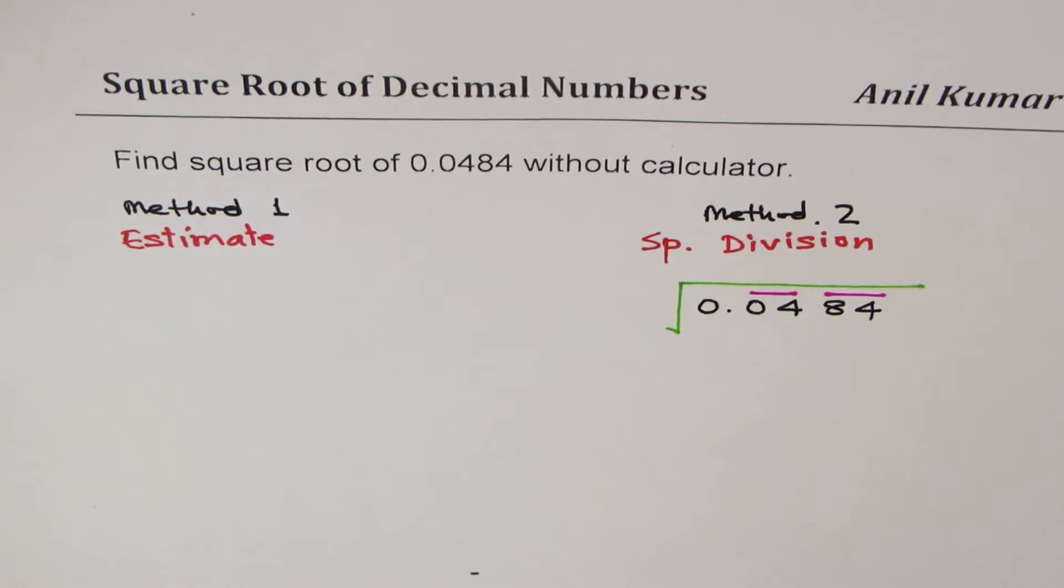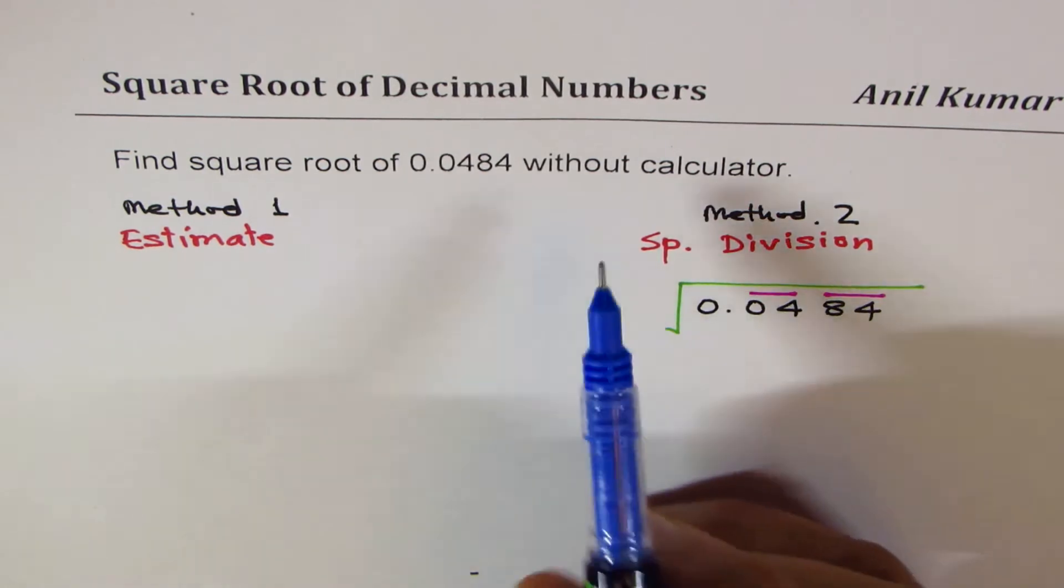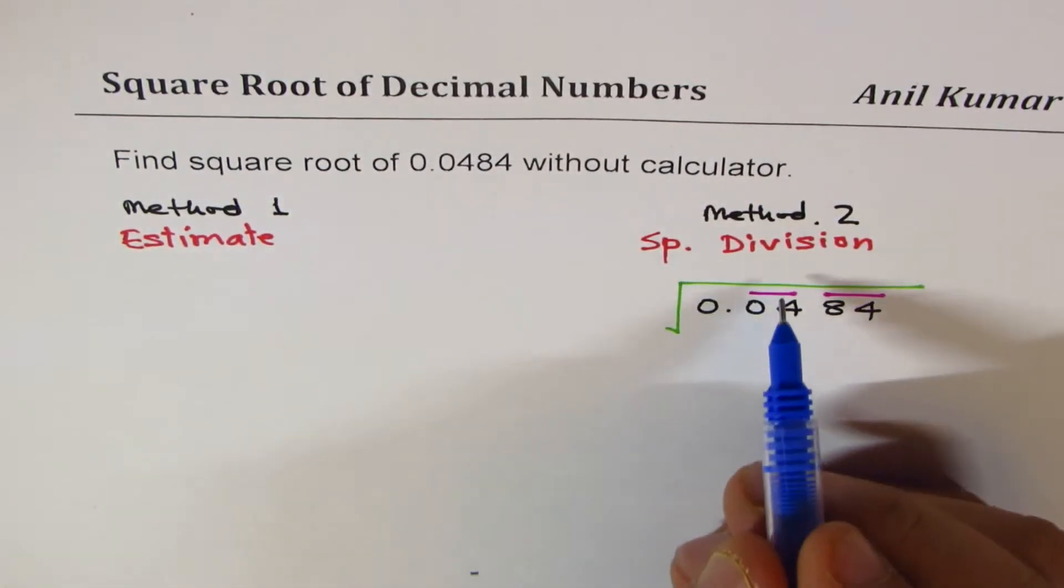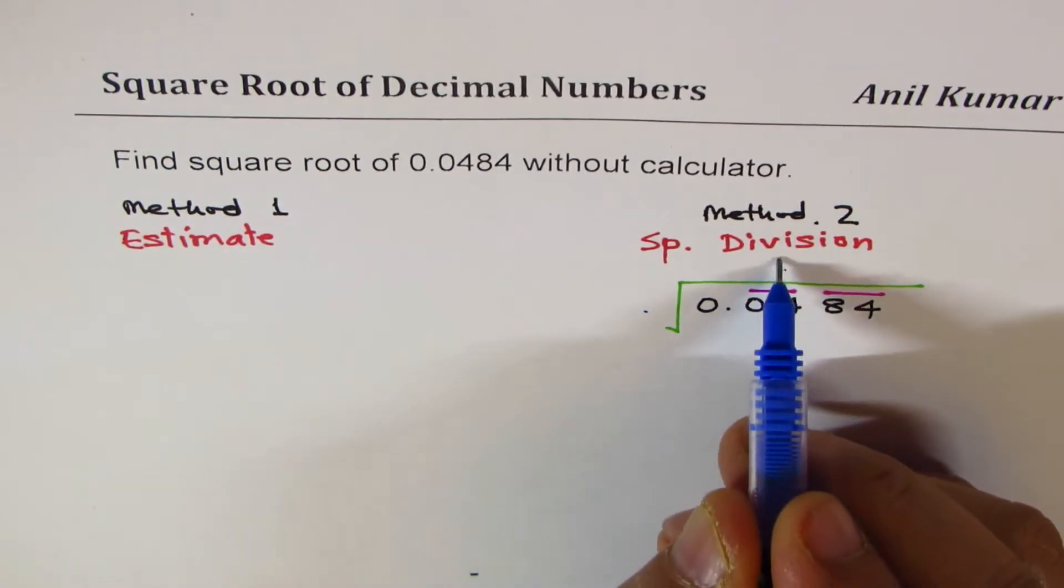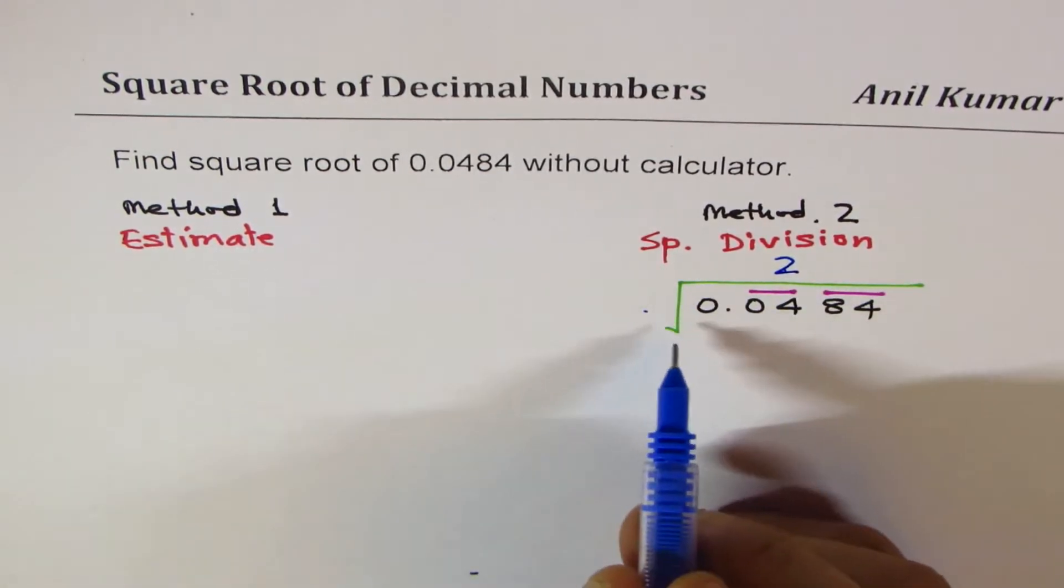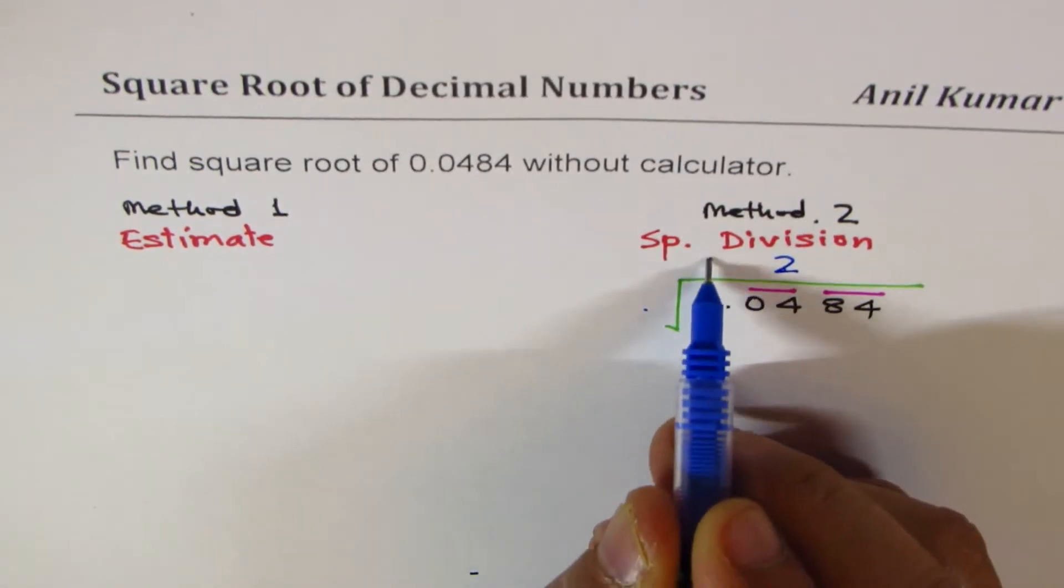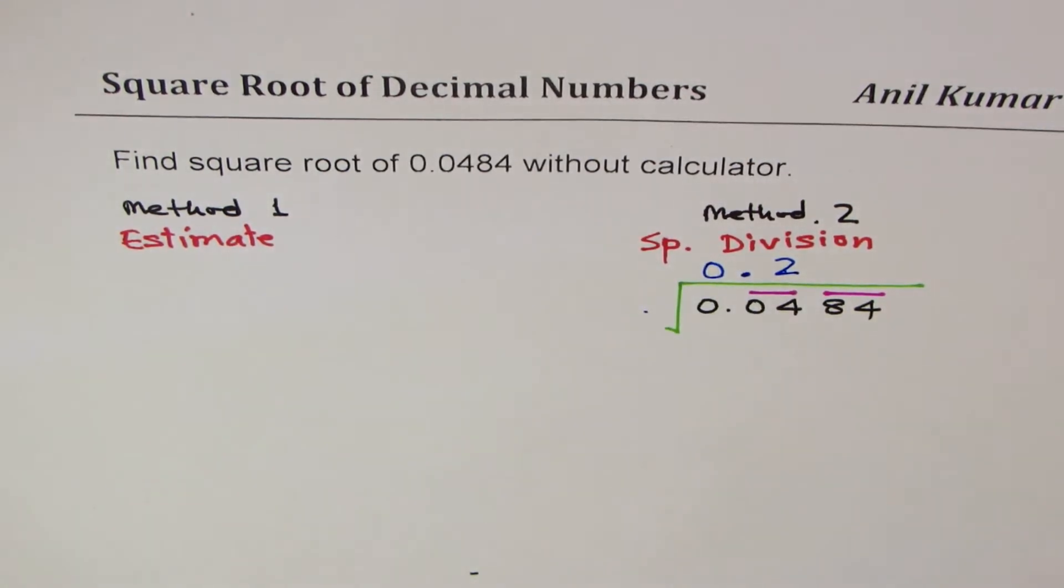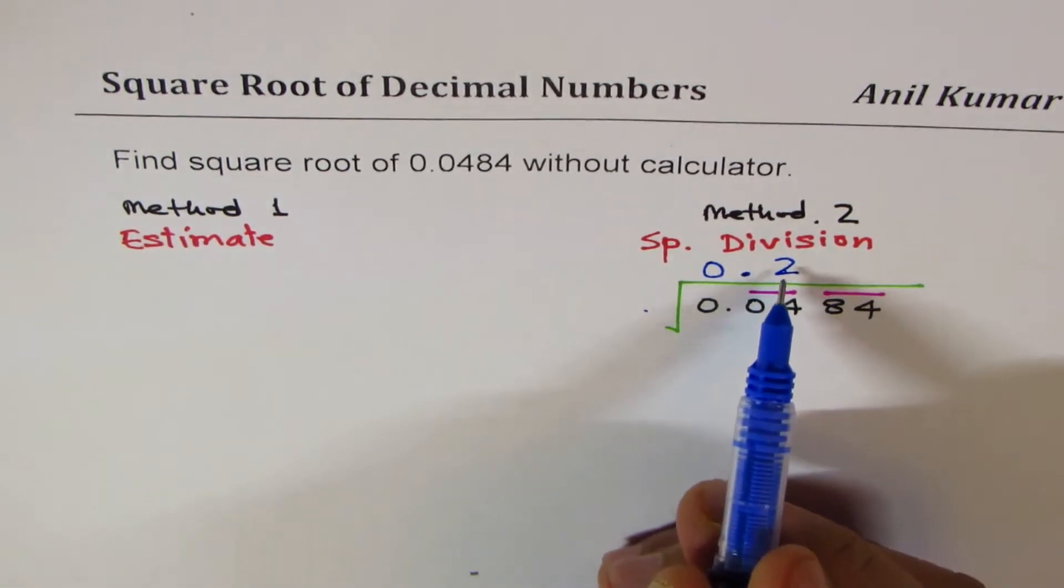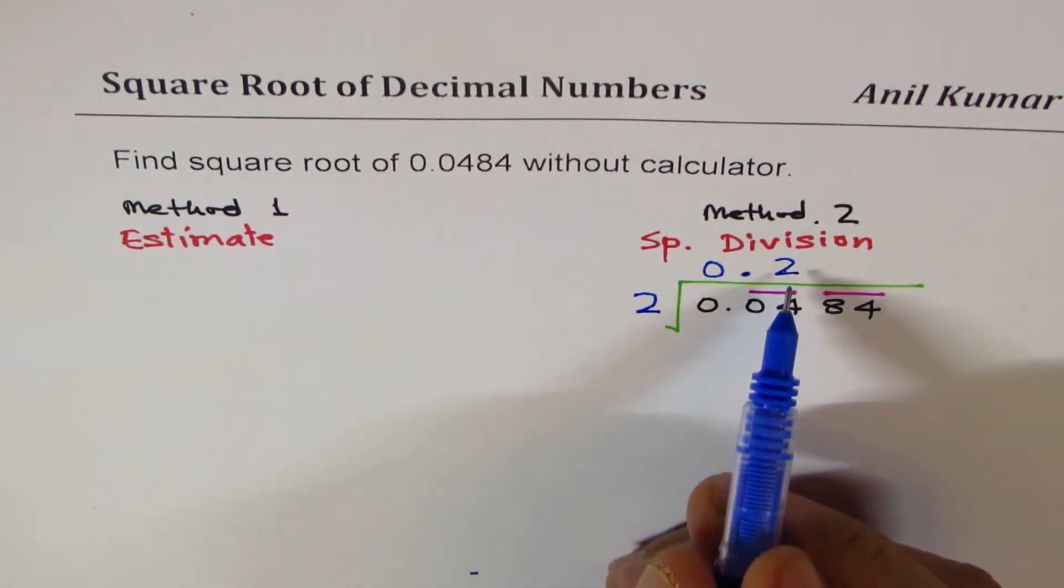We have to look for a number which can divide into the first group. Since we are doing square root, we have to write the same number in these two places. The number has to be 2. We picked up a group after decimal, so I have to put decimal.